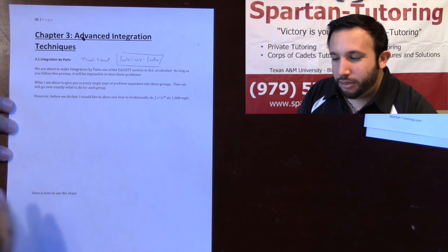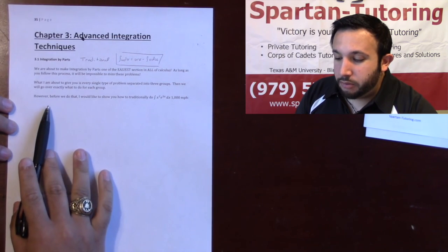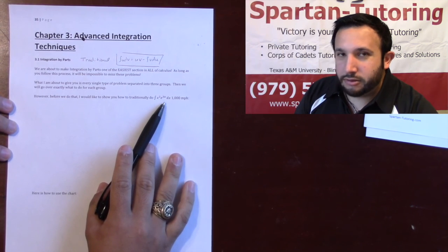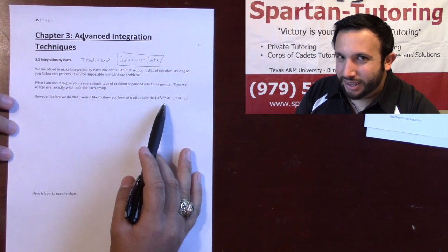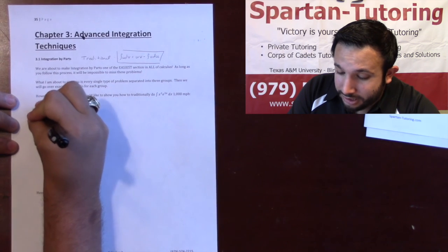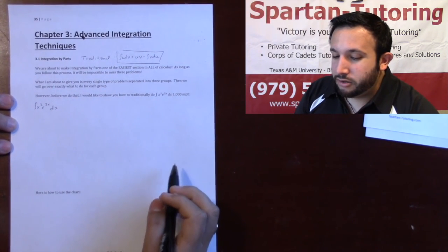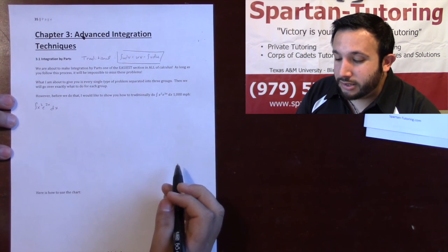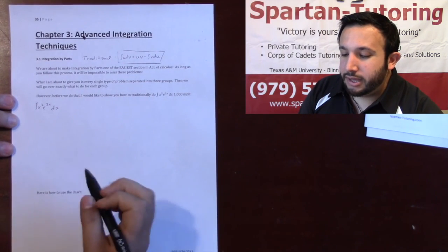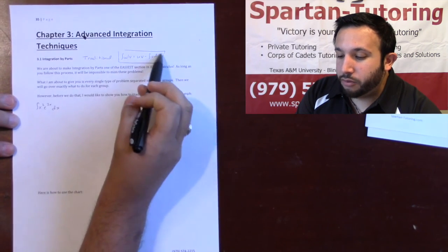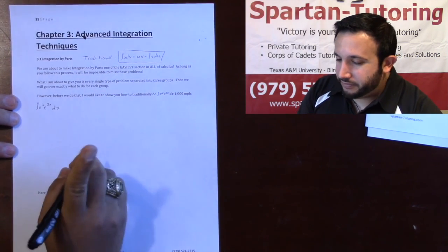In order to appreciate the method I'm about to show you, I first want to do this problem traditionally, as fast as I can — but I'll still explain every step. You don't have to write this down because that's not the way I like to do it. So with x squared times e to the 3x, we need to find u and dv, then plug into the formula.